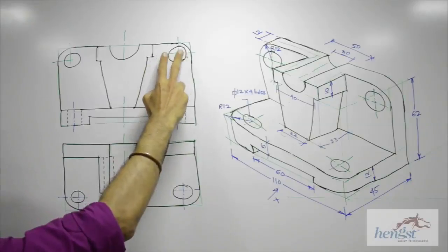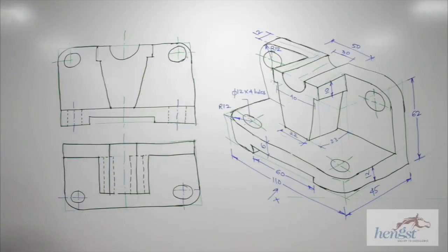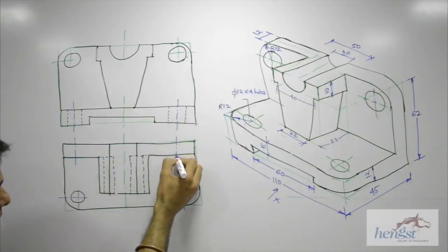Then we need to draw dotted line for this circle as well. So we will take the center line and we will take radius 6.